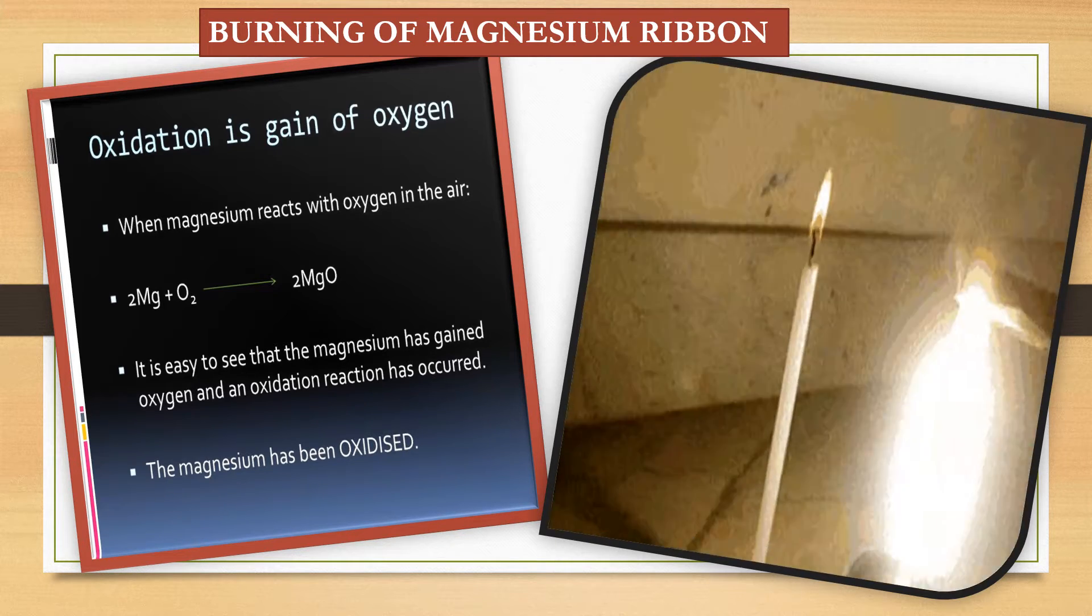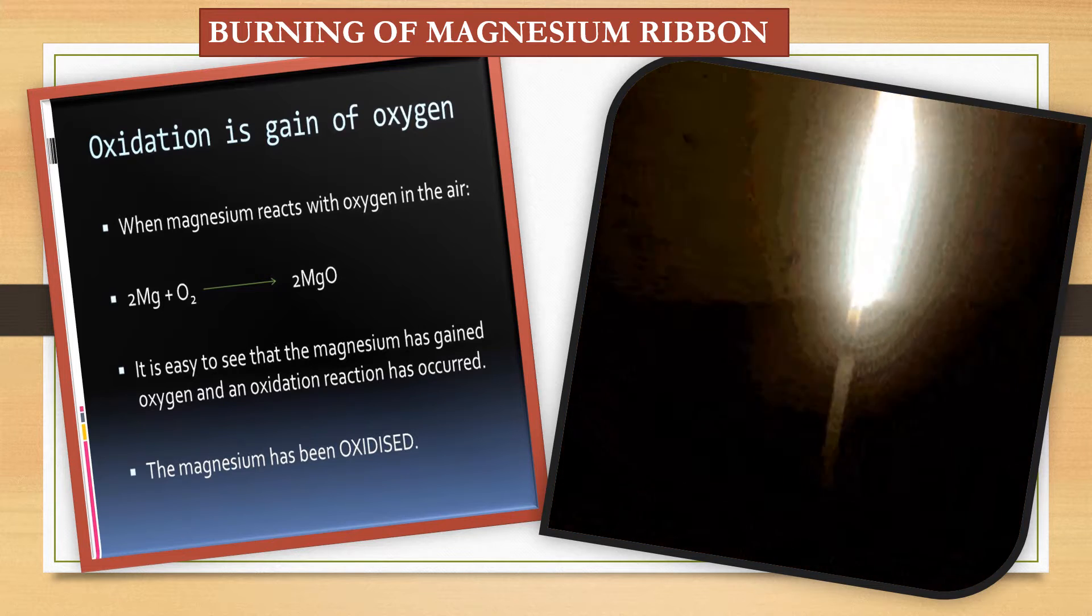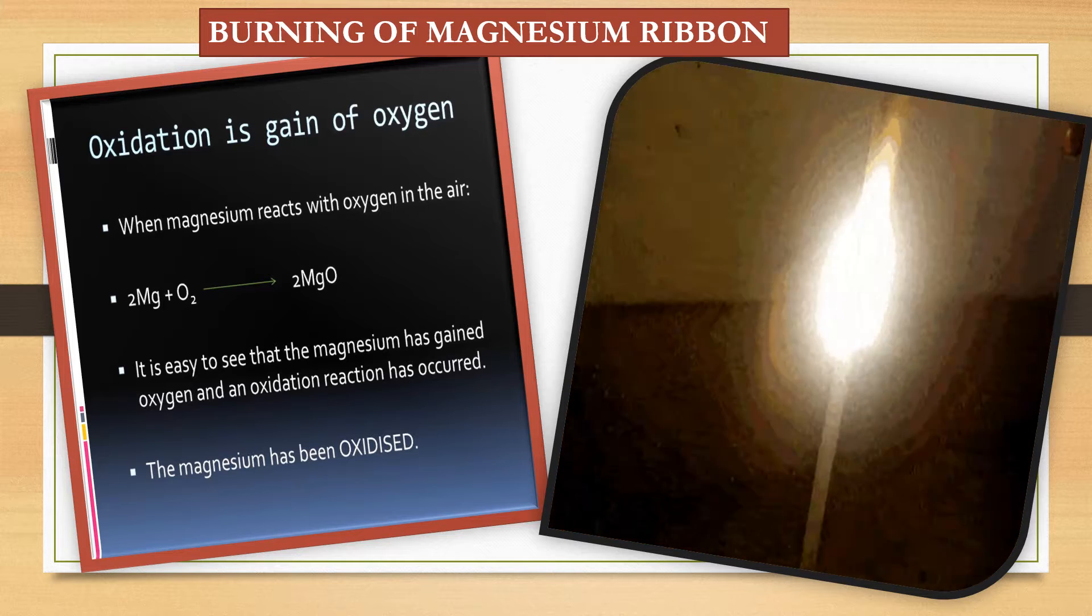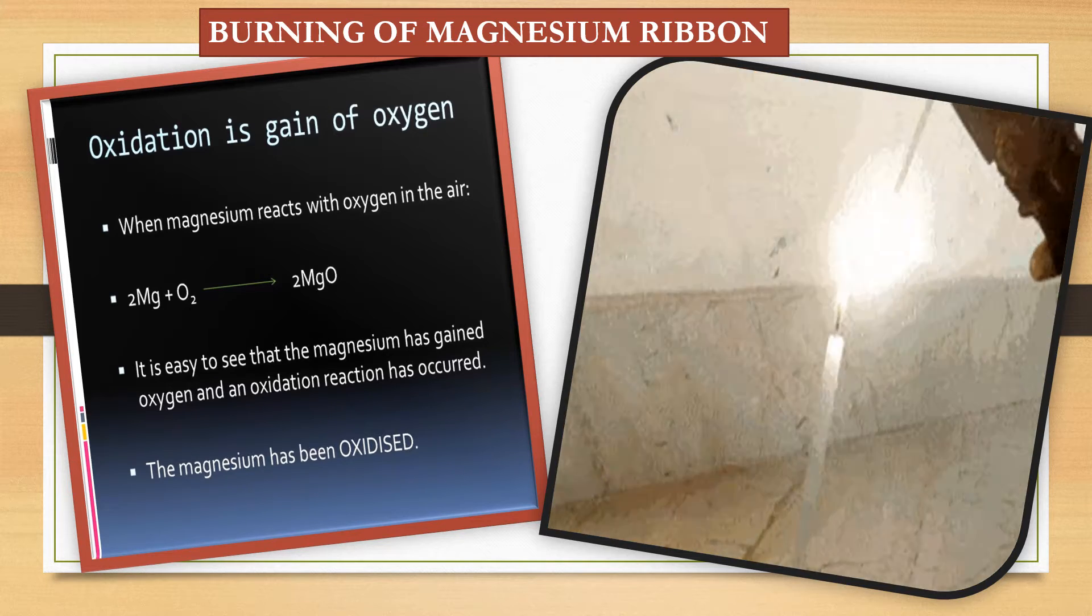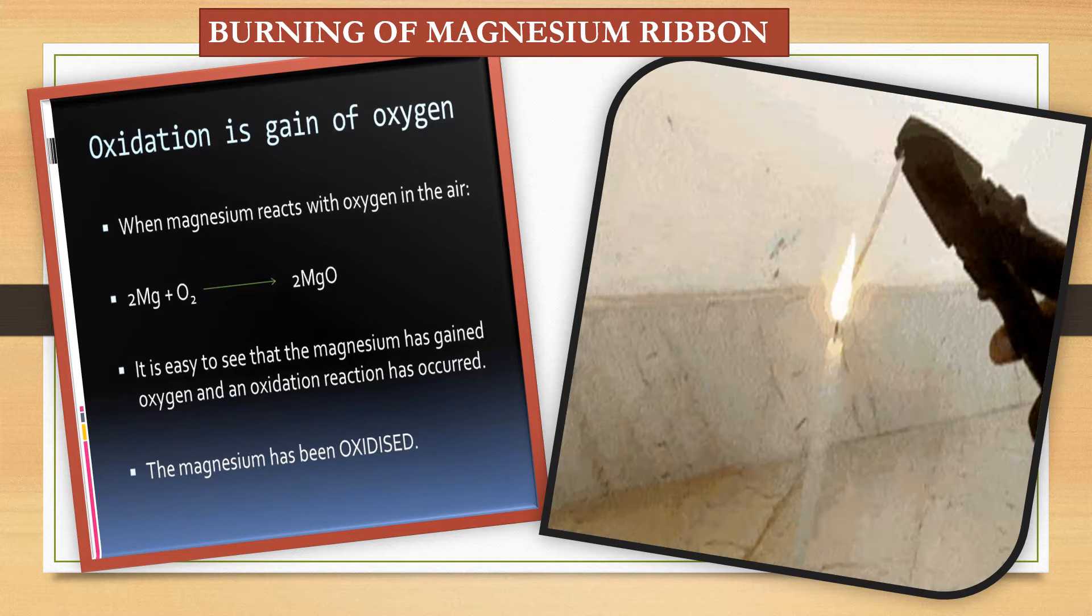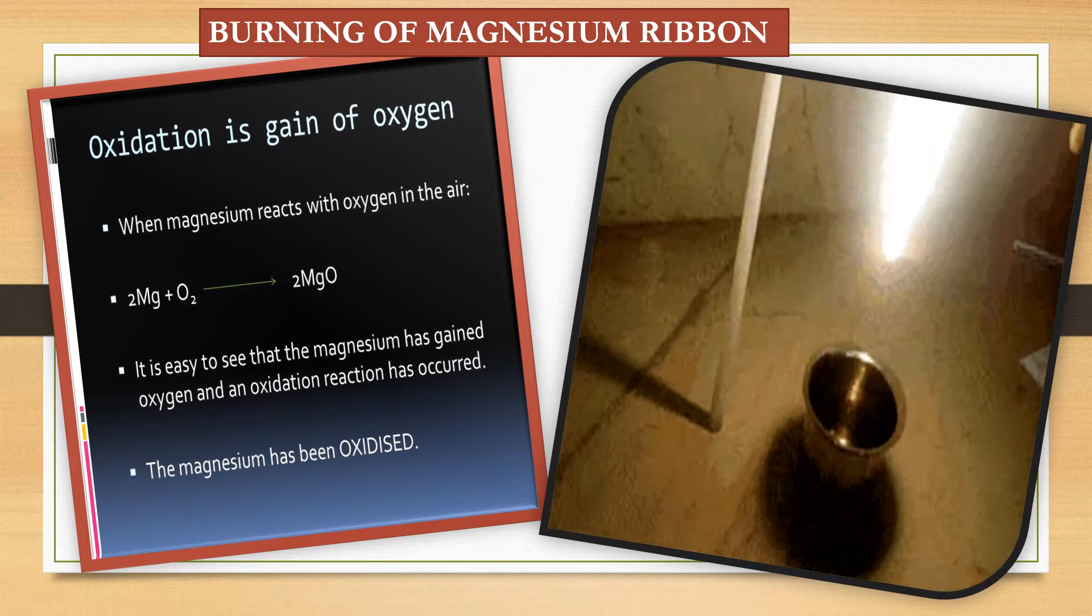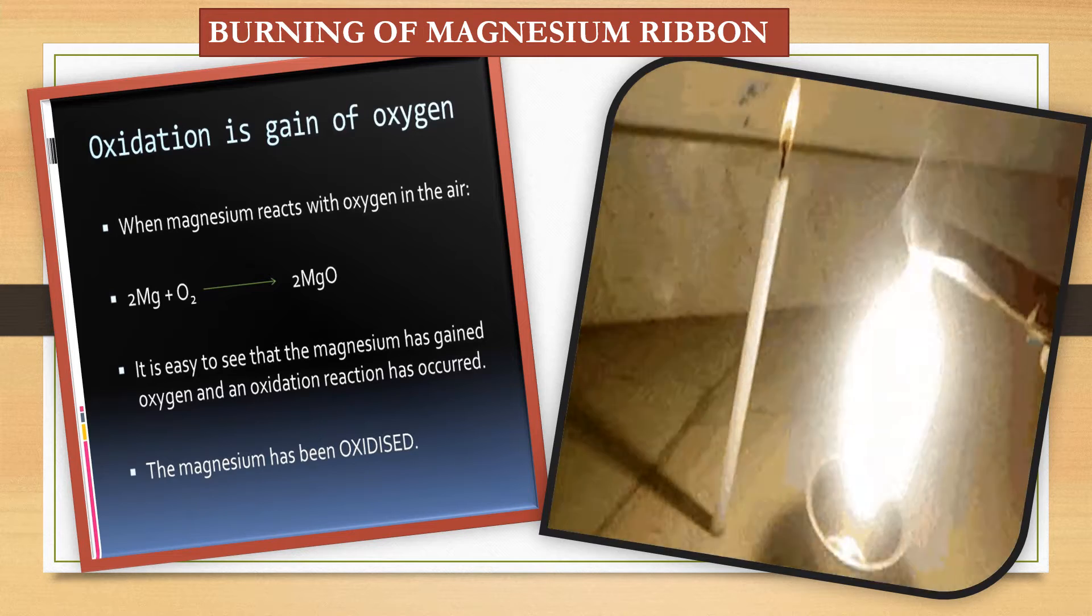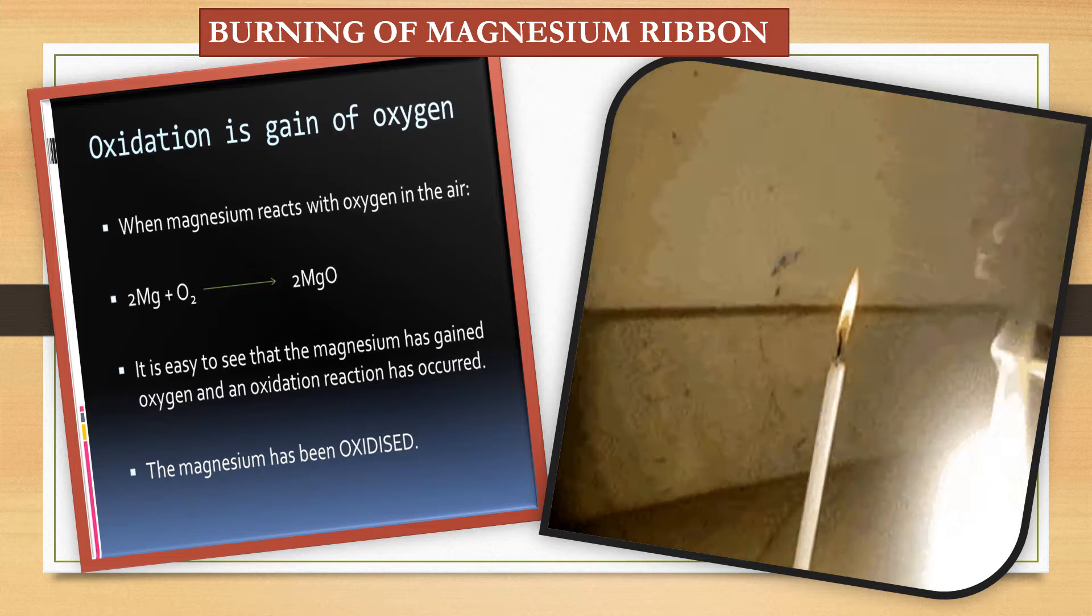First I am starting with burning of magnesium ribbon. When magnesium reacts with oxygen in air, magnesium oxide or MgO will form. Reaction is 2Mg plus O2, formation of 2MgO or magnesium oxide. It is easy to see that the magnesium has gained oxygen and an oxidation reaction has occurred. The magnesium will gain oxygen from this oxygen molecule and it will be oxidized to magnesium oxide. So, it proves that oxidation is gain of oxygen.